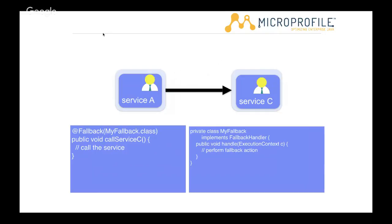For fallback, if a microservice is calling another and the backend is not responding — even with retries — you can do a fallback. There are two flavors: one is to use a handler class. You specify '@Fallback(MyFallback.class)', which creates a dedicated handler so invocation is directed to the handle method instead of service C. The other flavor is to specify a fallback method directly on the annotated method, which returns a local result from your own application.